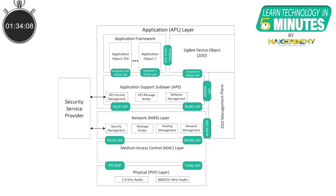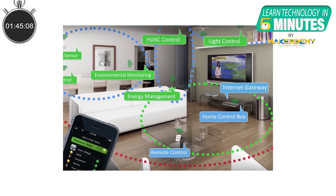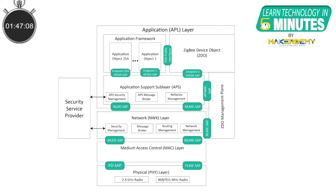Now let us take a closer look at the four different layers one at a time. Let's start from the physical layer. This layer provides the interface to the physical transmission medium. In the case of Zigbee, it is the radio. The physical layer consists of two sublayers that operate in two separate frequency ranges.